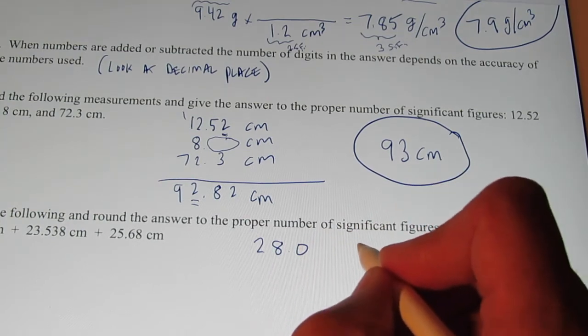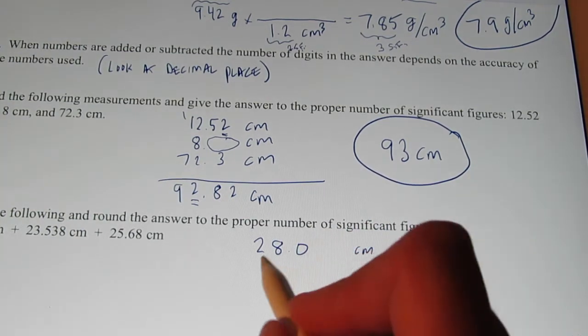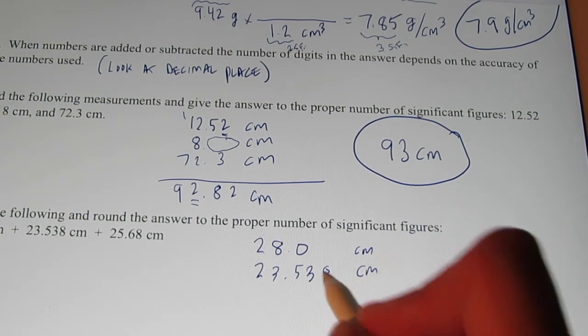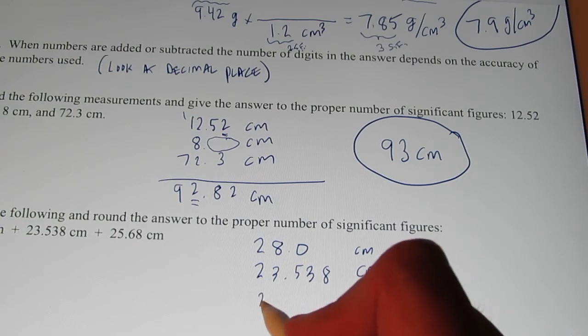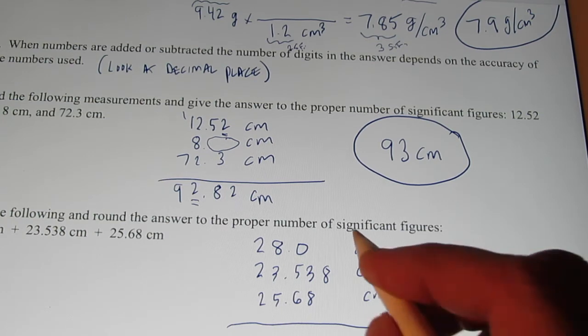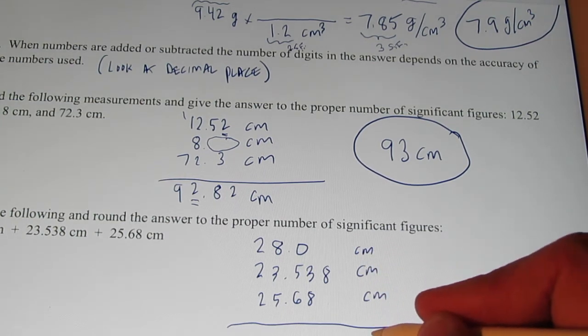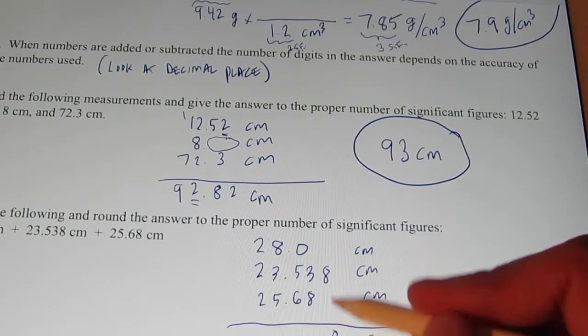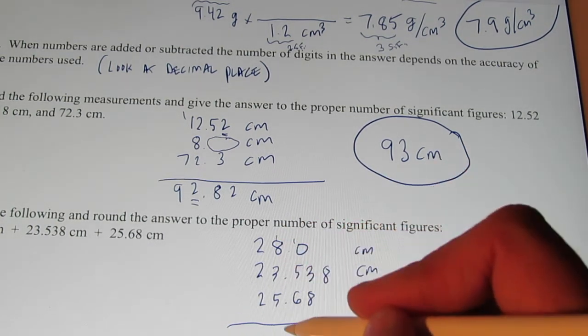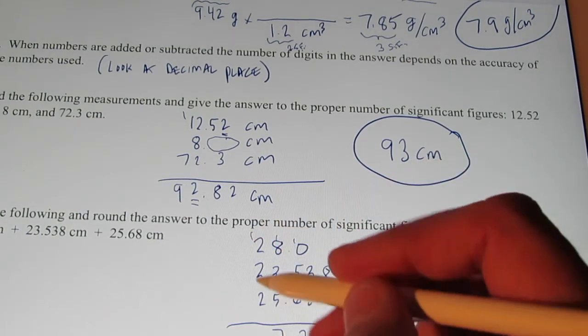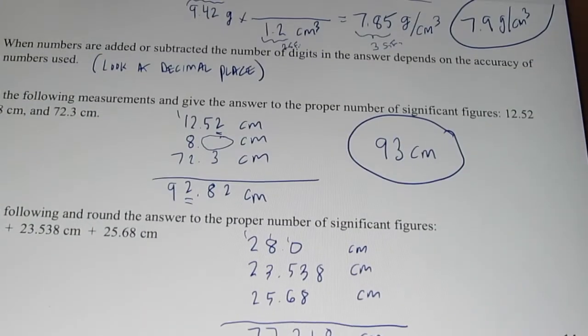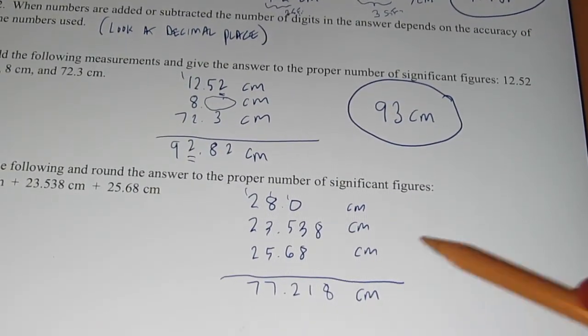28.0 centimeters, so I know that to the nearest tenth. 23.538 centimeters. Boy, I know that to the nearest thousandth. And 25.68 centimeters. Alright, let's add these up. Centimeters plus centimeter plus centimeter is simply centimeter. This is an eight. This is an eleven. Carry the one. This is a two. Carry the one. Twelve. Seventeen. Carry the one. Okay, if I did my math right, my calculator would say 77.218 centimeters.